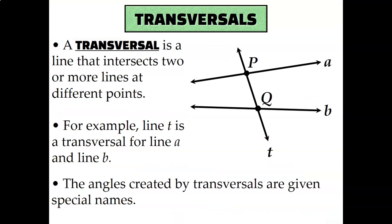So let's take a look at the word transversal. A transversal is a line that intersects two or more other lines at different points. For example, in this diagram, line T is a transversal because it intersects line A at point P, and it intersects line B at point Q.